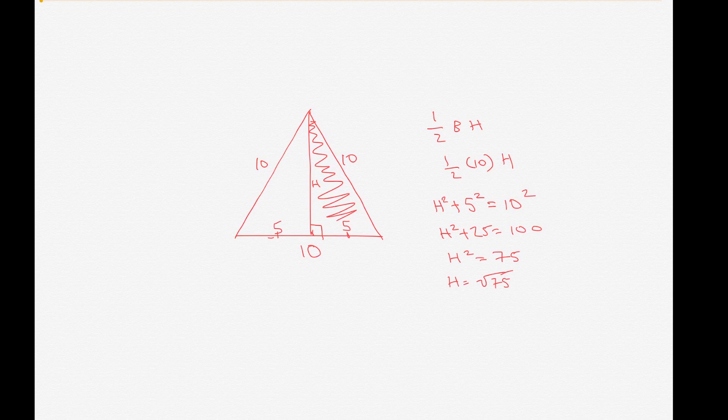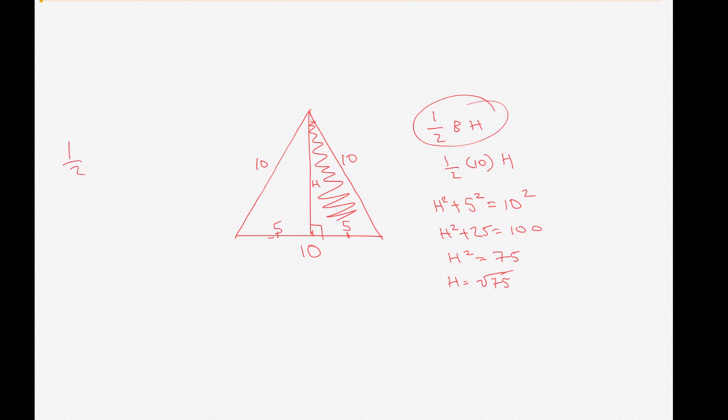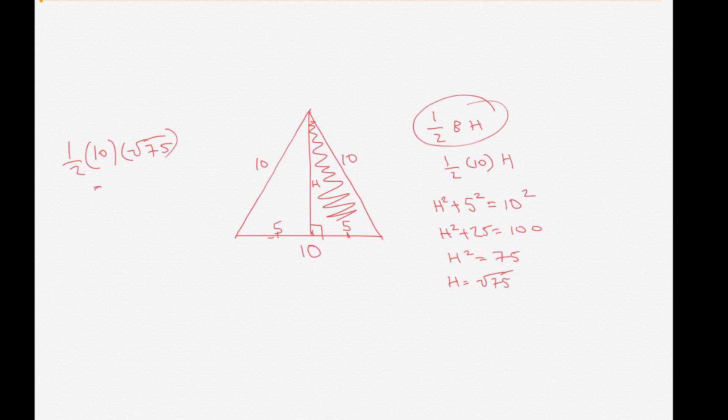So if we go back to our equation, it would be one-half times the base, which is ten, times the height, which is square root of seventy-five. The answer would be five times the square root of seventy-five.